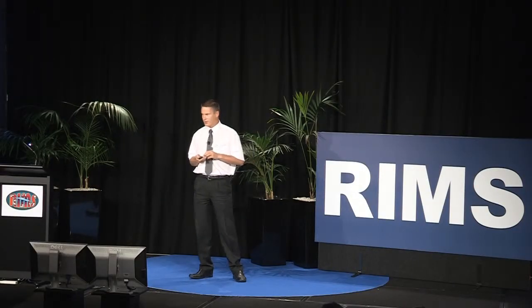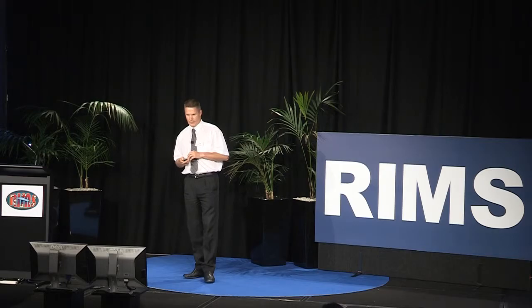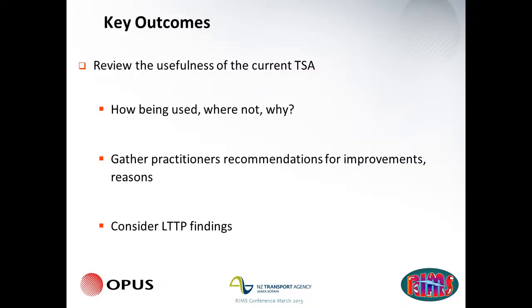What about changing economic parameters — are the current ones we're using appropriate, or do we need to be doing something else? There's been a lot of talk around maintenance costs, and it's trying to make sure that the maintenance costs we're actually using to get these treatments actually have evidence-based support behind them. In terms of key outcomes, this is my view at the moment: reviewing the usefulness of the current TSA, how it's being used, where it's not being used, and maybe why it's not being used. Then gathering practitioners' recommendations for improvements and trying to integrate back in any findings from our long-term pavement performance work.